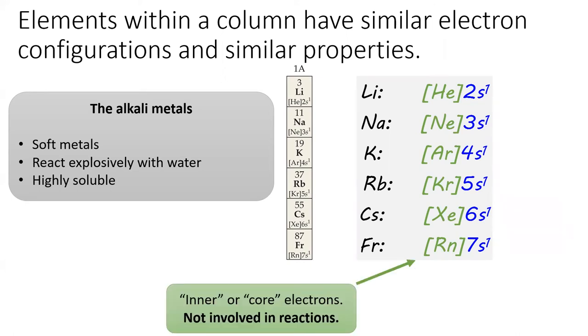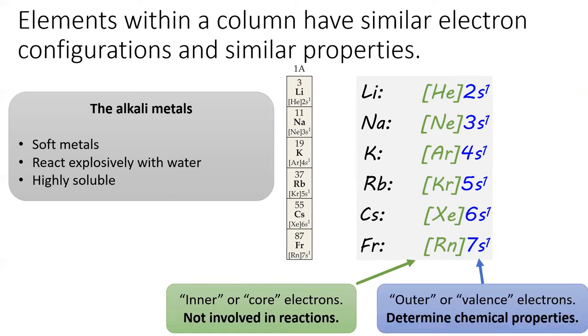The electrons which we abbreviated away are called inner electrons or core electrons, and they are not involved in reactions. However, the outer electrons, especially those in s and p orbitals, are called the valence electrons. The valence electrons are the most important electrons because they determine the chemical properties of the element. The alkaline metals, shown here, all have a single valence electron in an S subshell.